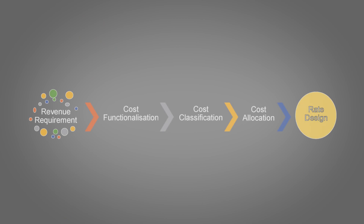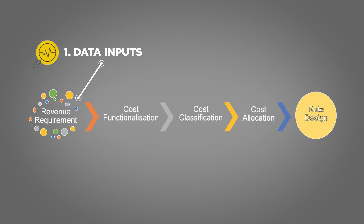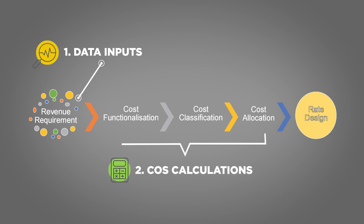Okay, that all makes sense. And how do I use the simplified cost of supply tool to do all this? Well, let's take a look. Here is an overview of how the tool works. We start with data inputs, then move into the cost of supply calculations, and finally we'll move into tariff setting. Let's start with the data inputs.